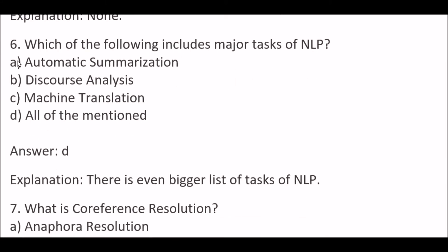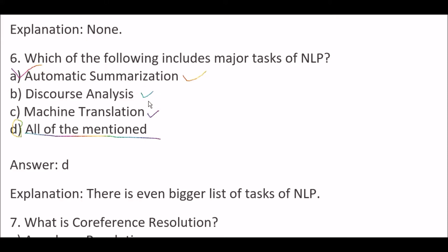Next question: which of the following includes major tasks of NLP? Options are: A) Automatic summarization, C) Machine translation, D) All of the mentioned. The right answer is option D, all of the mentioned. Major tasks of NLP include automatic summarization, discourse analysis, and machine translation, and there is an even bigger list of NLP tasks.